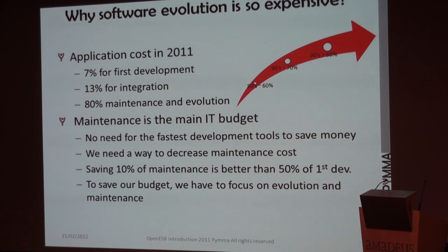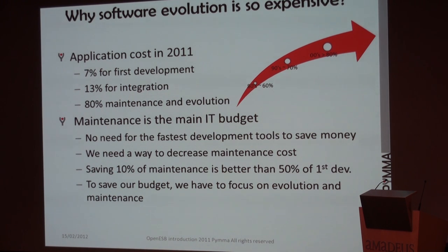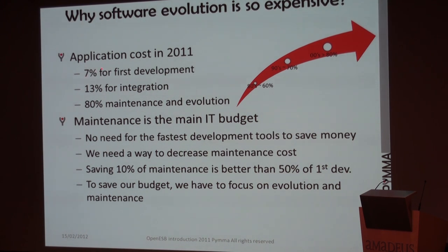It's very interesting to keep in mind this number. When you develop an application, from development — from the goal set by the business — to the time you retire your application from production, you spend, for example, 100 units: 7% for the first development, 30% for integration, and 80% for maintenance and evolution. 80% means that if we are able to save even 10% of the maintenance and evolution cost, it is more than the cost of the first development.